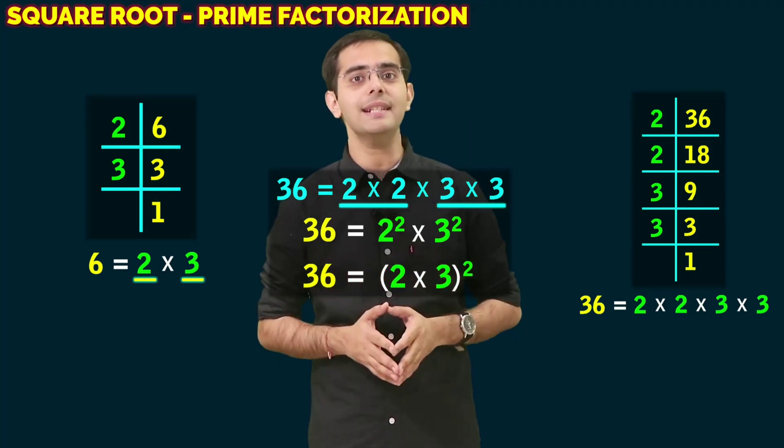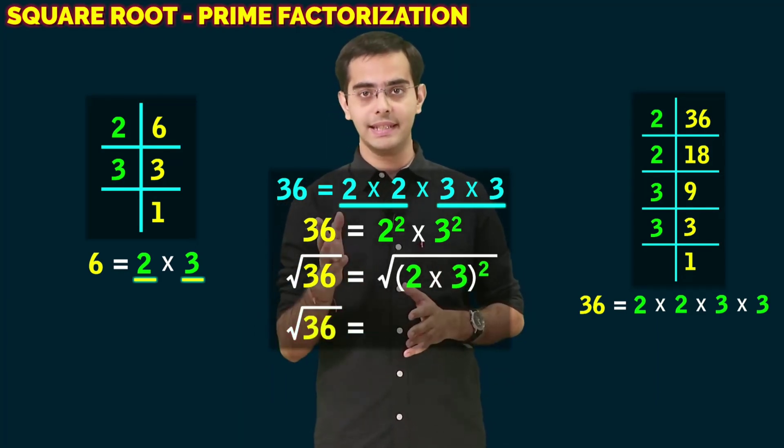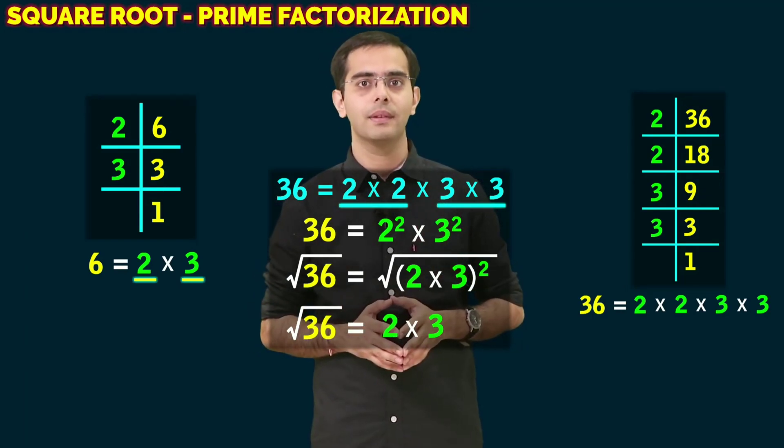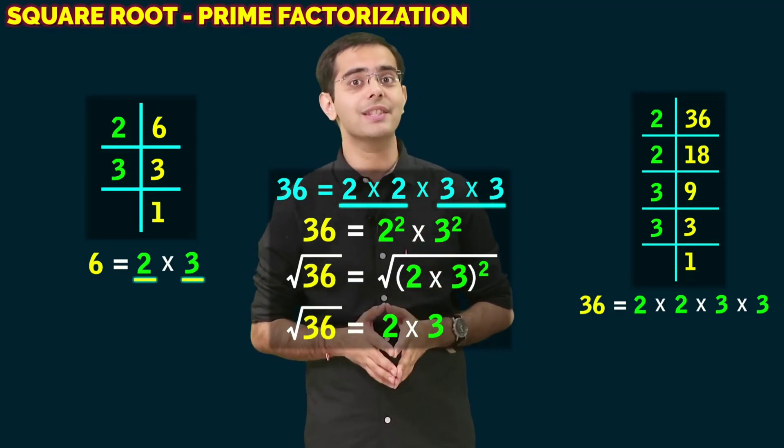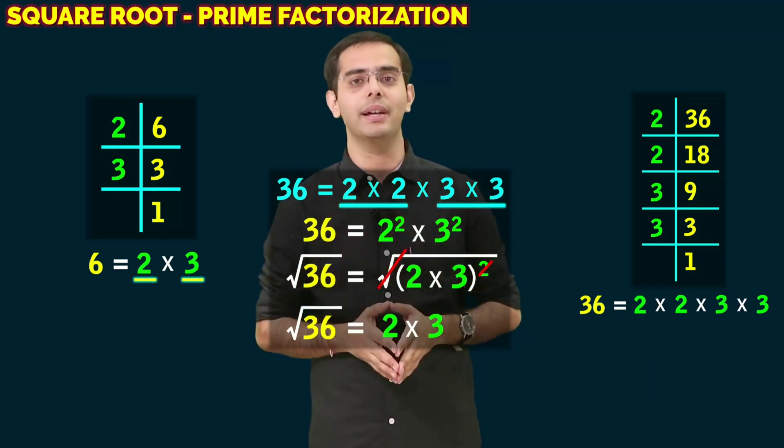Next we take the square root on both sides, which gives us √36 = 2 × 3. We know that square and square root are inverse operations, so they have cancelled each other out here.